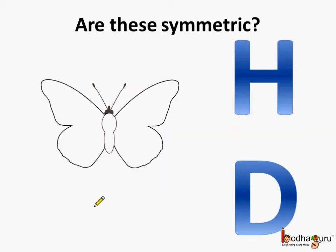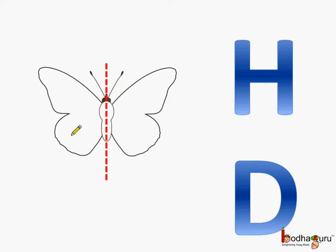Now, are these symmetric in nature? Let us figure it out. First, the butterfly. Here, this line is dividing the butterfly into identical halves.